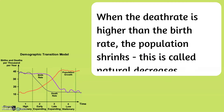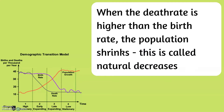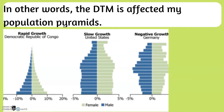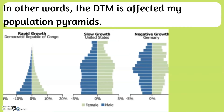When the death rate is higher than the birth rate, the population shrinks. This is called natural decrease. In other words, the Demographic Transition Model is affected by many population pyramids.